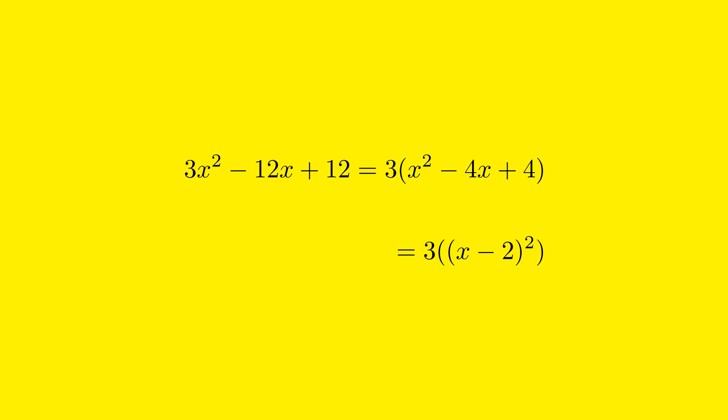Thus, x² - 4x + 4 can be rewritten as (x - 2)².